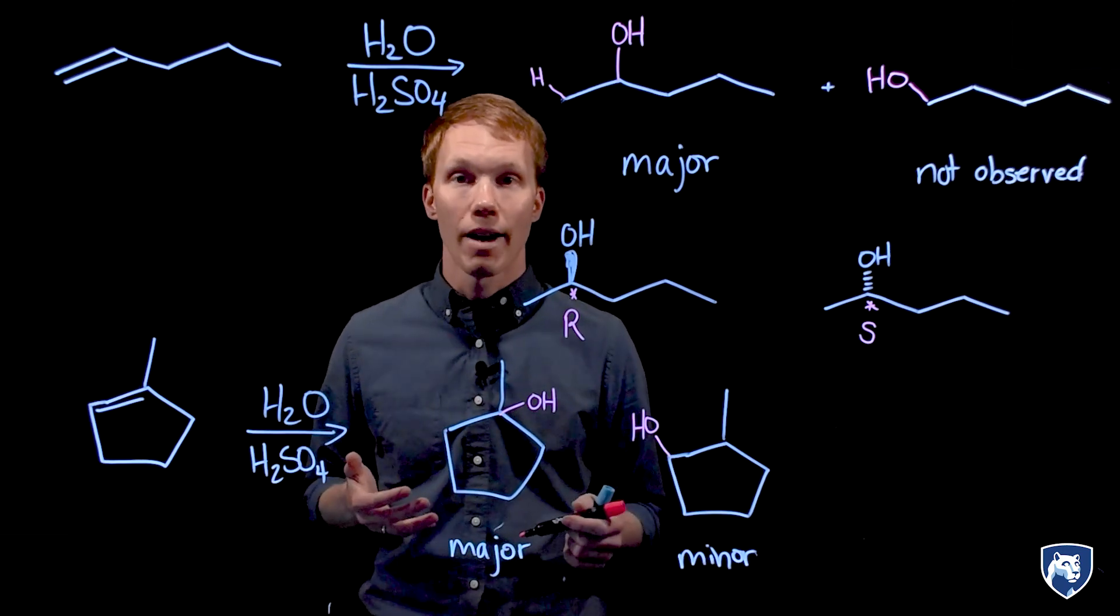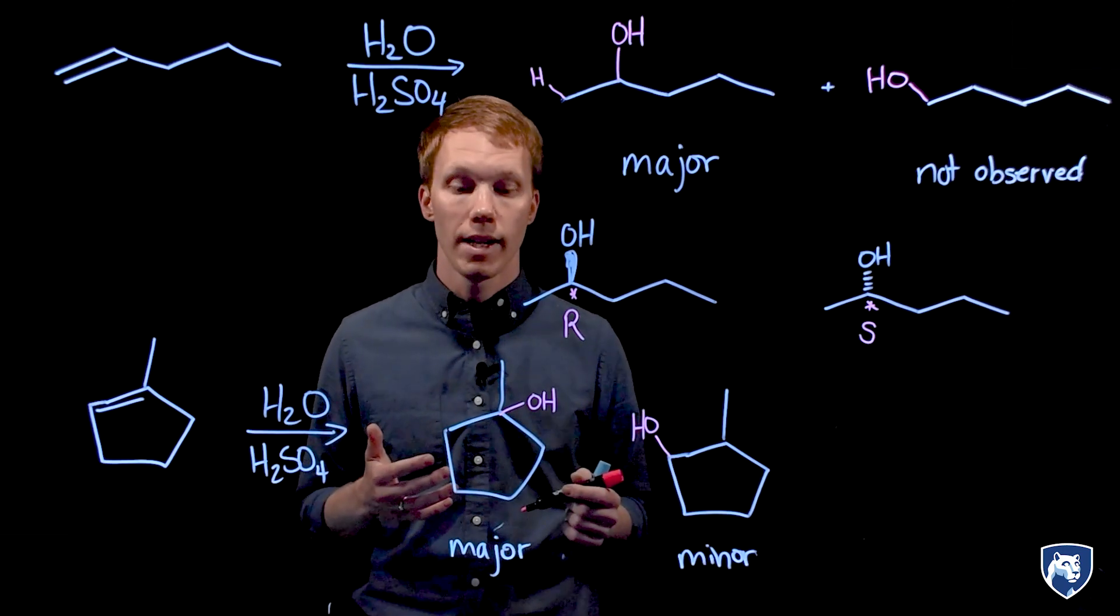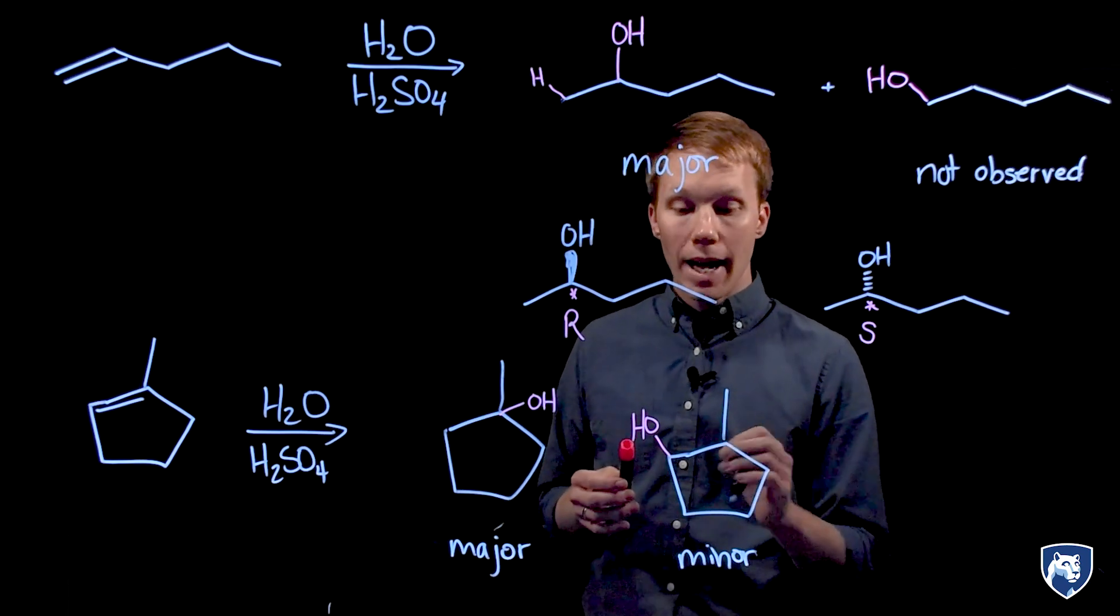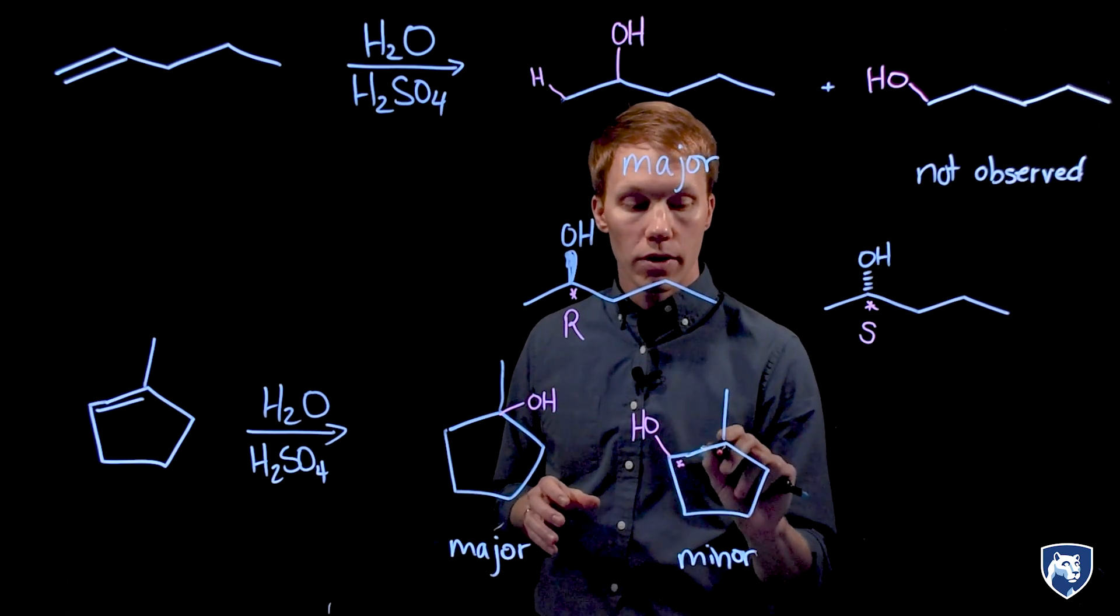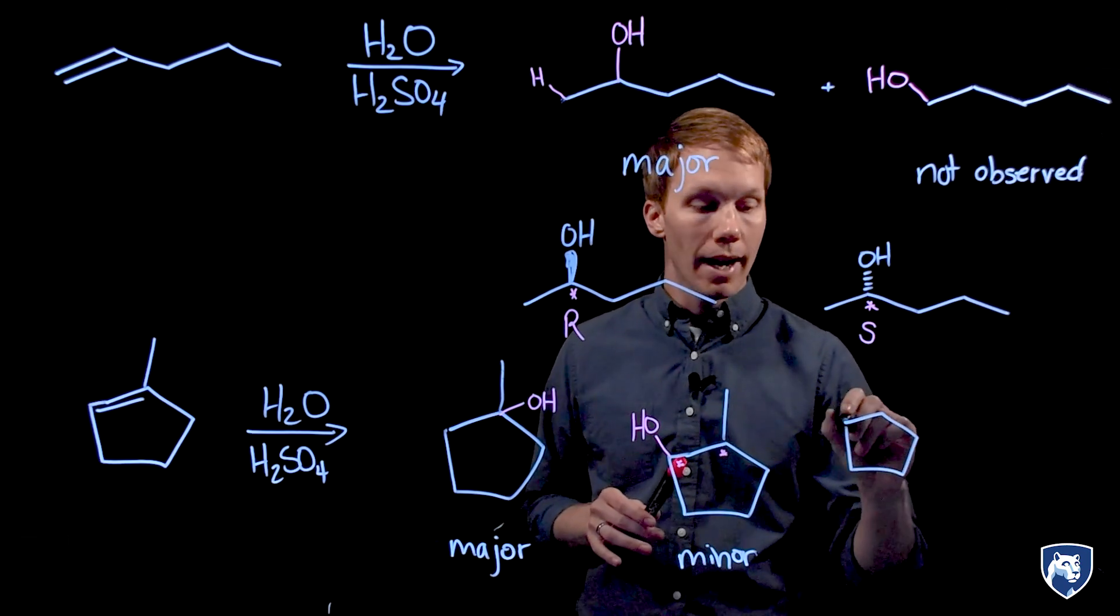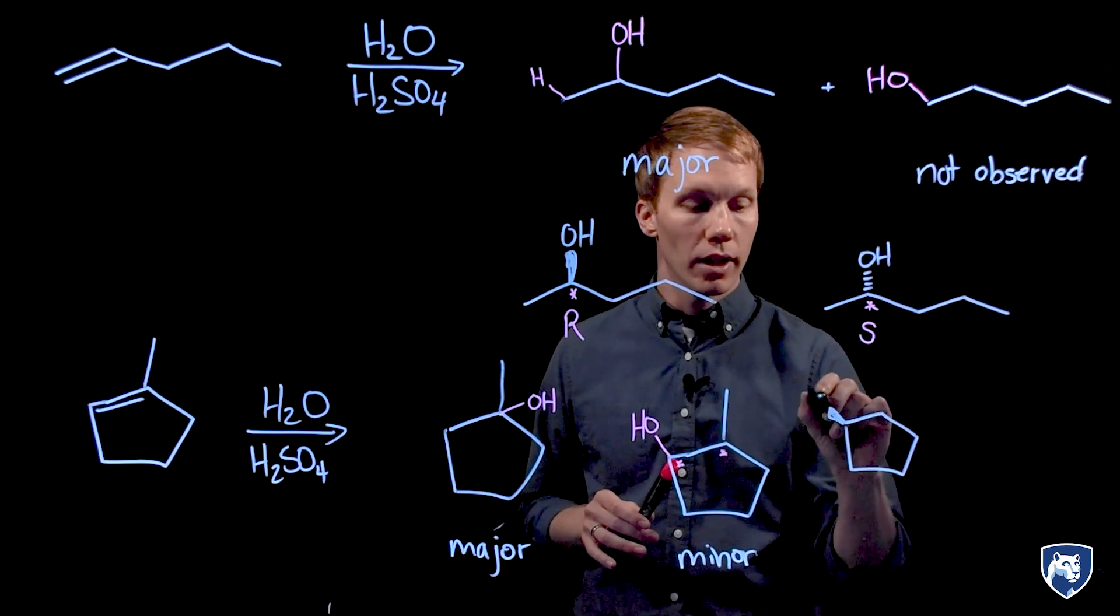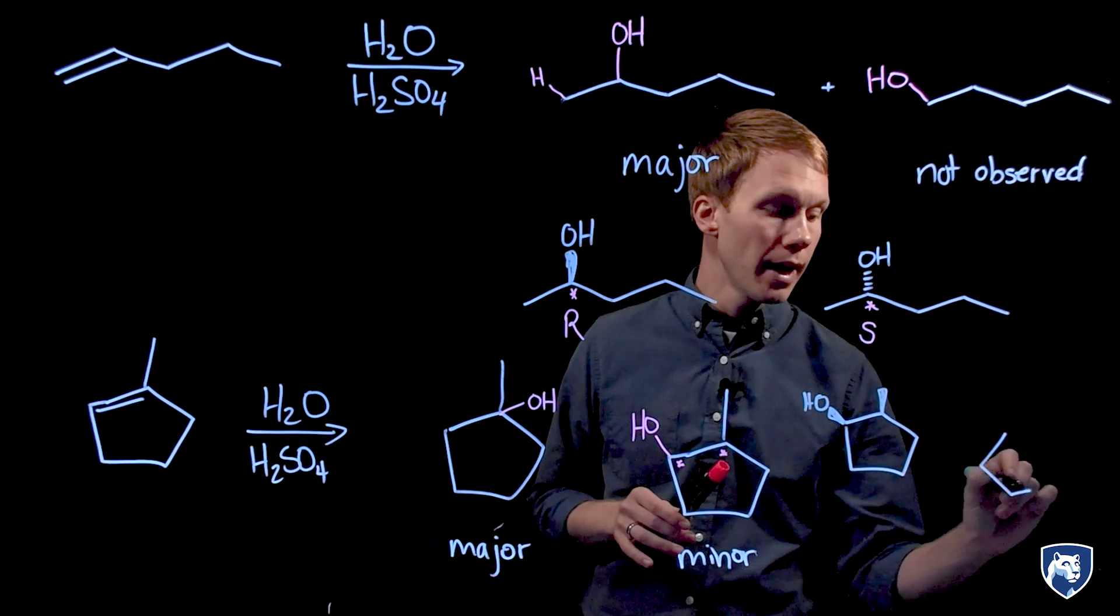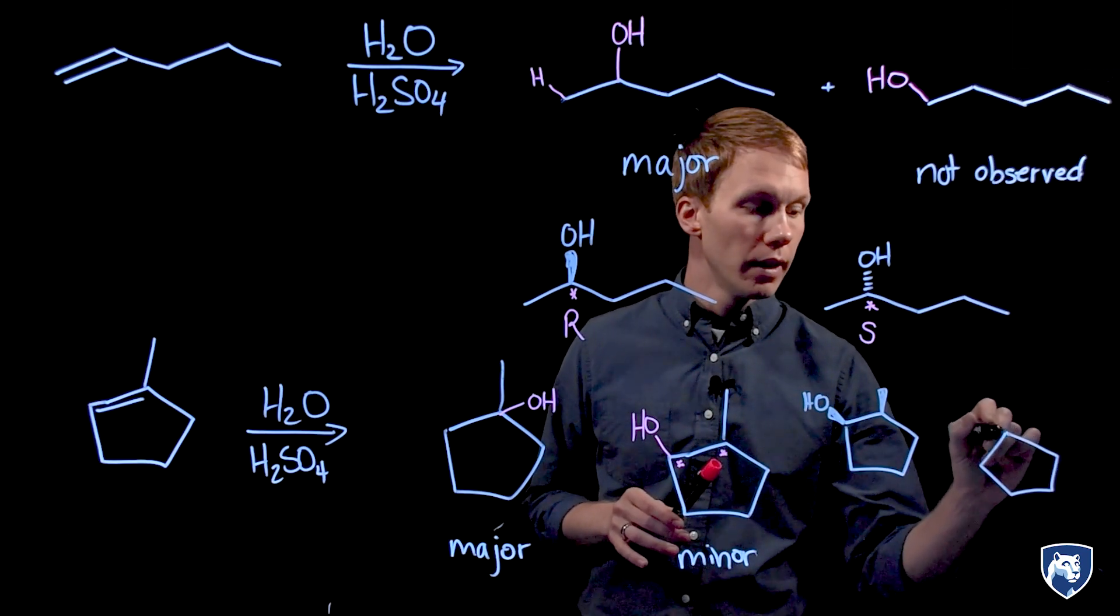In terms of stereochemistry, our major product is achiral. There are no chiral centers present in that compound. As far as our minor product goes, we have generated two chiral centers, and both chiral centers will be mixed in our products. So we will actually get a collection of four stereoisomers, two pairs of enantiomers.